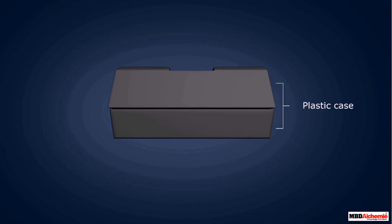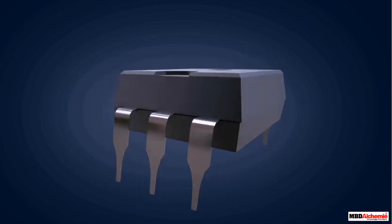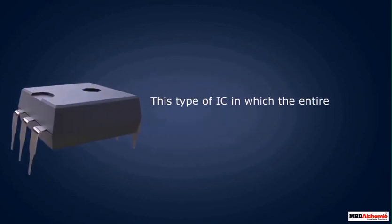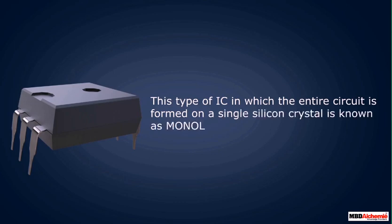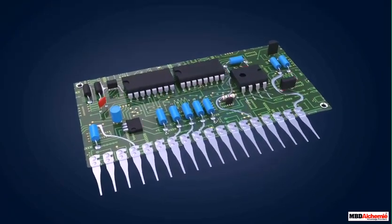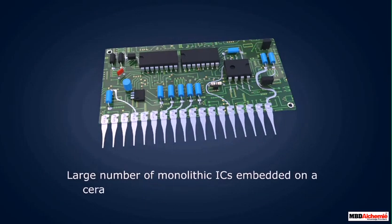Finally, with the help of thin aluminium leads, the connectors are taken out, and this is how the standard package IC is manufactured. This type of IC, in which the entire circuit is formed on a single silicon crystal, is called a monolithic IC. These are the most widely used ICs. A large number of monolithic ICs embedded on a ceramic substrate is known as a hybrid IC.